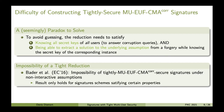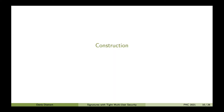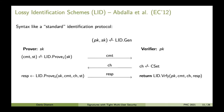But we wouldn't be here if there wasn't a solution — so let's have a look at our construction. Before we can talk about the actual construction, we need some basics. The first thing is lossy identification schemes, introduced by Abdalla et al. at EuroCrypt 2012. Technically a lossy identification scheme is just like a standard identification scheme.